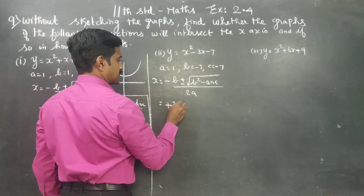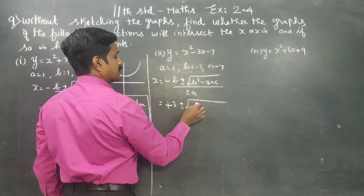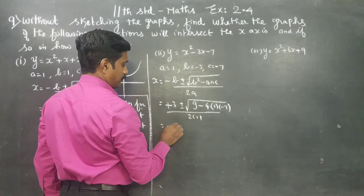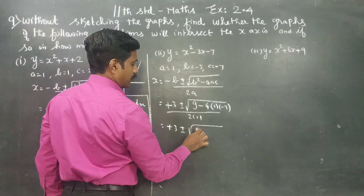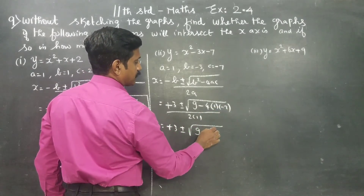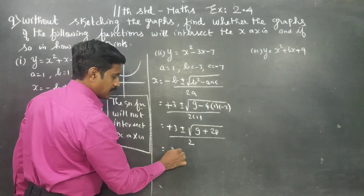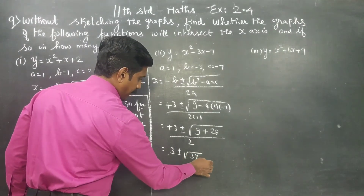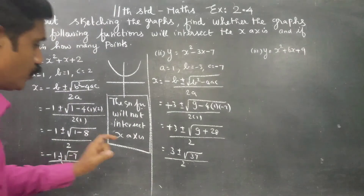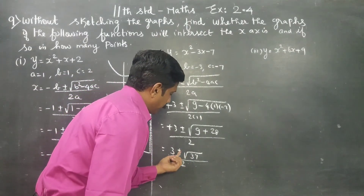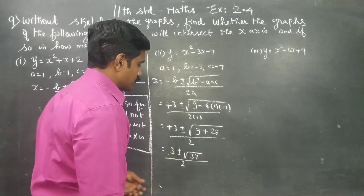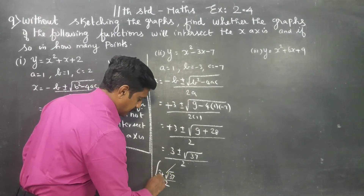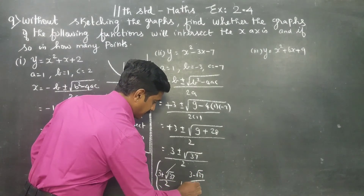Substituting: minus of minus 3, that is plus 3, plus or minus square root of 3 squared minus 4 into 1 into minus 7, by 2 into 1. This gives 3 plus or minus square root of 9 plus 28, by 2, which equals 3 plus or minus square root of 37, by 2. The two roots are (3 + √37)/2 and (3 − √37)/2.